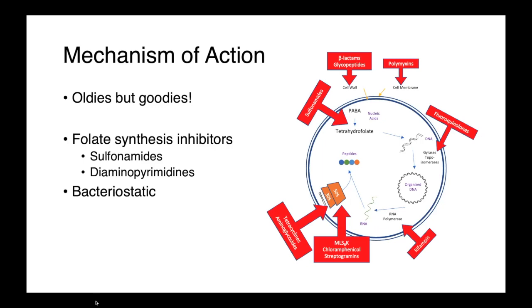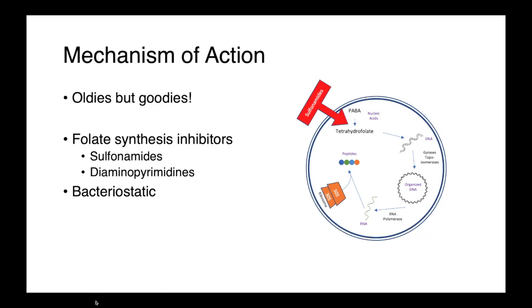The folate synthesis inhibitors are oldies but goodies. These are compounds that have been around for a really long time, particularly the sulfonamides. Folate synthesis inhibitors act by inhibiting the folate synthesis pathway, from paraminobenzoic acid, or PABA,